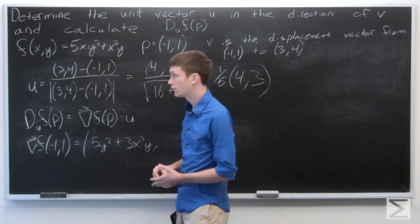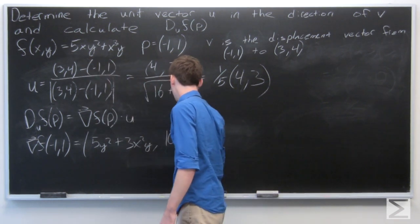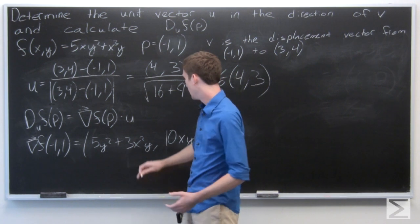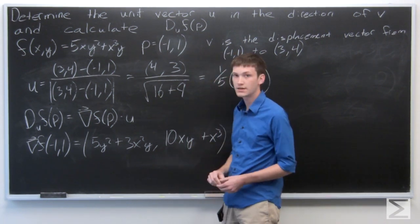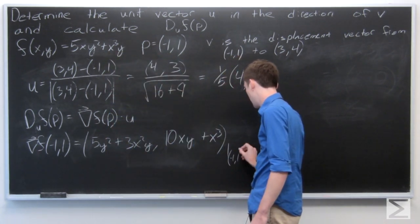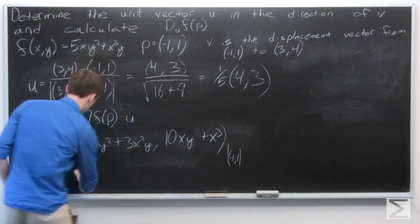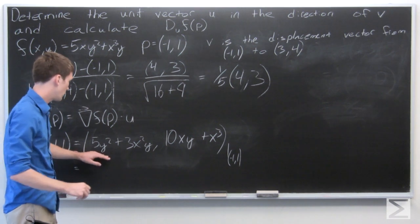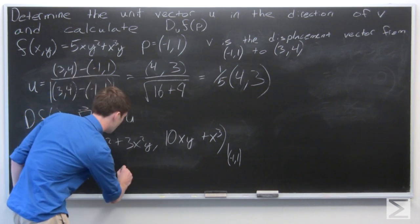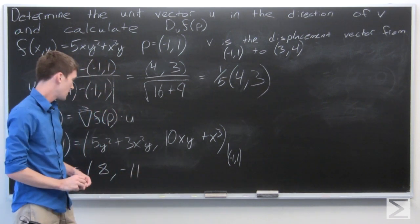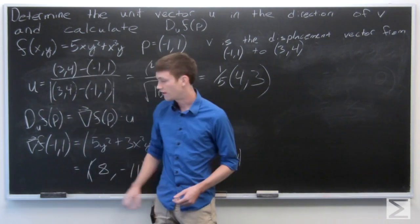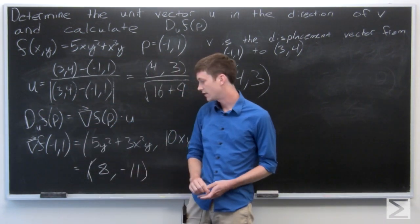Taking the partial derivative with respect to y, we get 10xy plus x cubed. We're going to evaluate that at negative 1, 1. When we plug in negative 1, 1, we get 8, negative 11. So our gradient vector of f at negative 1, 1 is the vector 8, negative 11.